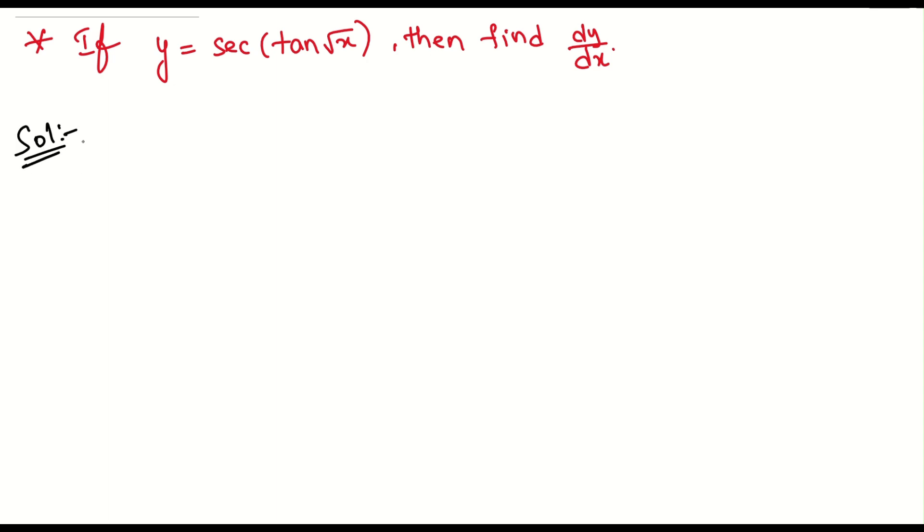So let me tell you how to do this. Let us consider what is y here. y is nothing but secant of tan of root x. If you want to do this, we have to apply the chain rule here.